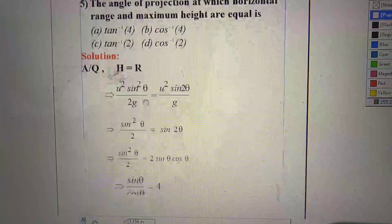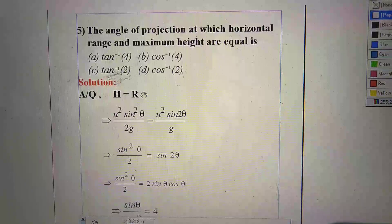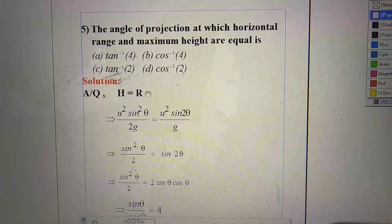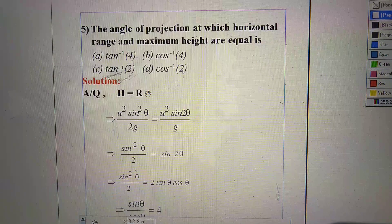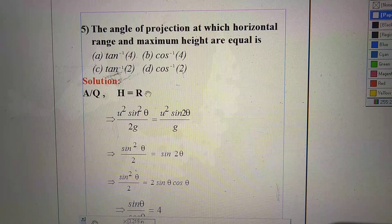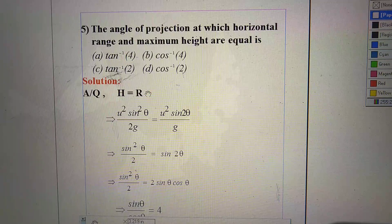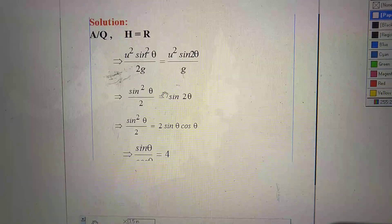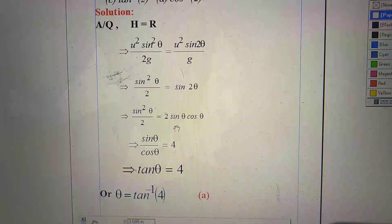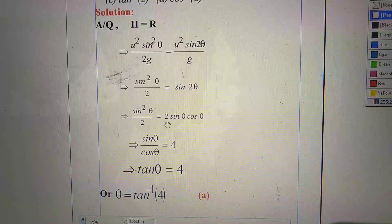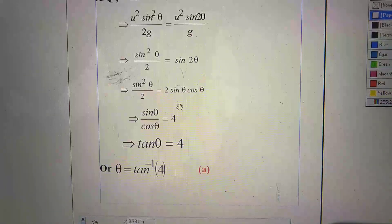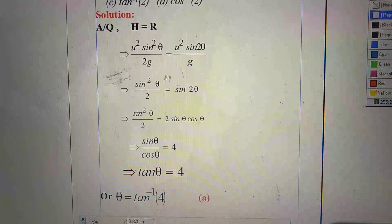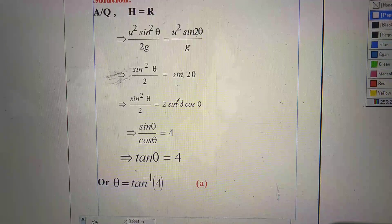Question number 5. The angle of projection at which horizontal range and maximum height are equal. So here we have to find out at what angle height and range should be equal to each other. As per question, H equal to R. Insert the formula of H and R and after calculation, see the calculation here. So here we find tan theta equal to 4. So right option is A, that is tan inverse 4. So these are the 5 questions here I explained.